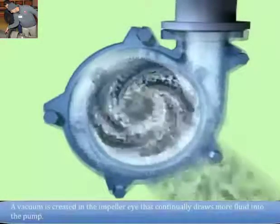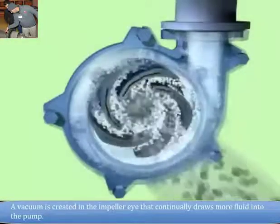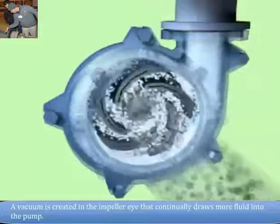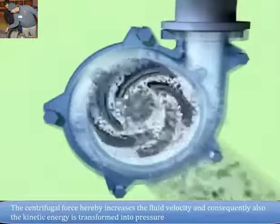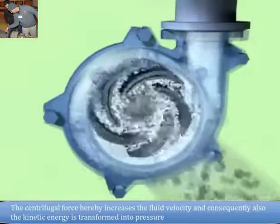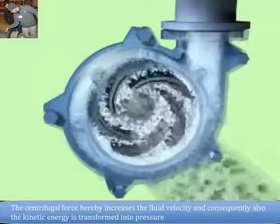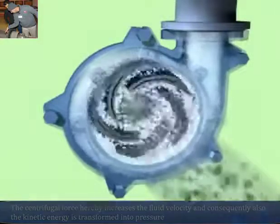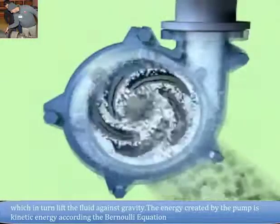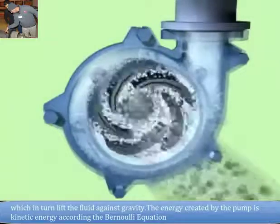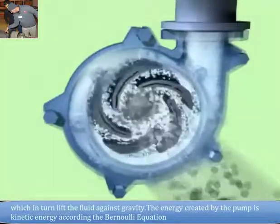A vacuum is created in the impeller eye that continually draws more fluid into the pump. The centrifugal force hereby increases the fluid velocity and consequently the kinetic energy is transformed into pressure which lifts the fluid against gravity. The energy created by the pump is kinetic energy according to Bernoulli's equation.